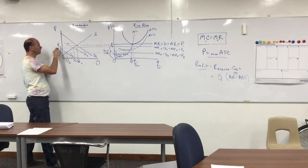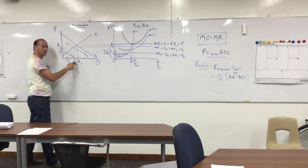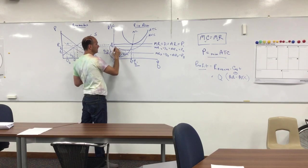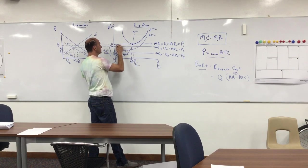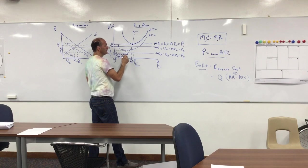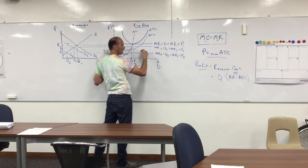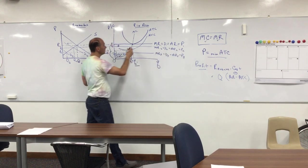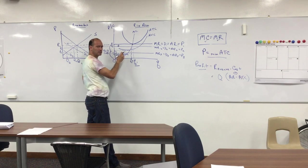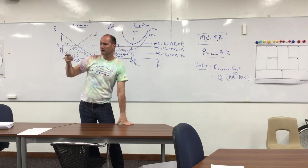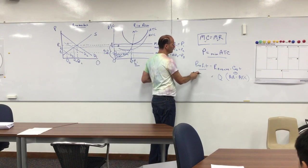If demand for rice reduces, the price goes down from P1 to P2, and quantity reduces from Q1 to Q2. At the lower price these farmers have to accept that price — they're price takers. The marginal revenue curve drops from MR1 to MR2. At this point the business's marginal revenue, which is its average revenue, is less than its average total cost, so for every unit it sells it gets less revenue than it costs to produce.